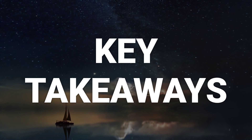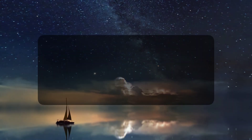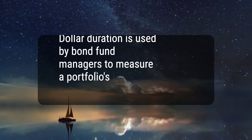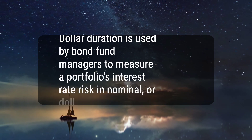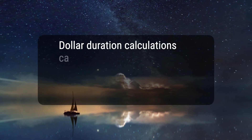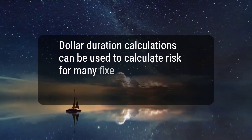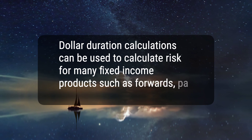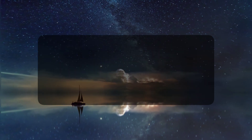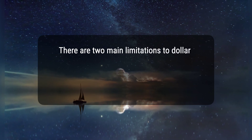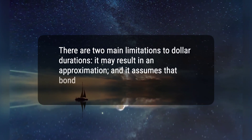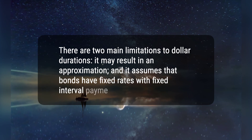Here are three key takeaways. 1. Dollar duration is used by bond fund managers to measure a portfolio's interest rate risk in nominal or dollar amount terms. 2. Dollar duration calculations can be used to calculate risk for many fixed income products such as forwards, par rates, zero-coupon bonds, etc. 3. There are two main limitations to dollar duration: it may result in an approximation, and it assumes that bonds have fixed rates with fixed interval payments.